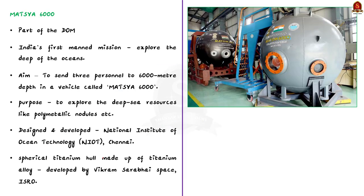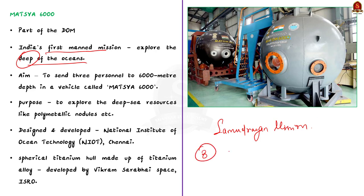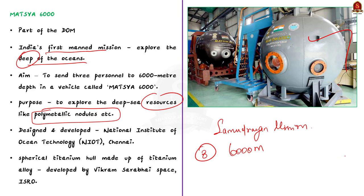Matsya 6000 is also known as the Samudrayan mission and is the first component of the deep ocean mission. It is India's first manned mission to explore the deep oceans, aiming to send three personnel to 6000 meter depth. The purpose is to explore deep sea resources like polymetallic nodules. Matsya 6000 is designed and developed by the National Institute of Ocean Technology (NIOT), located in Chennai under the Ministry of Earth Science.